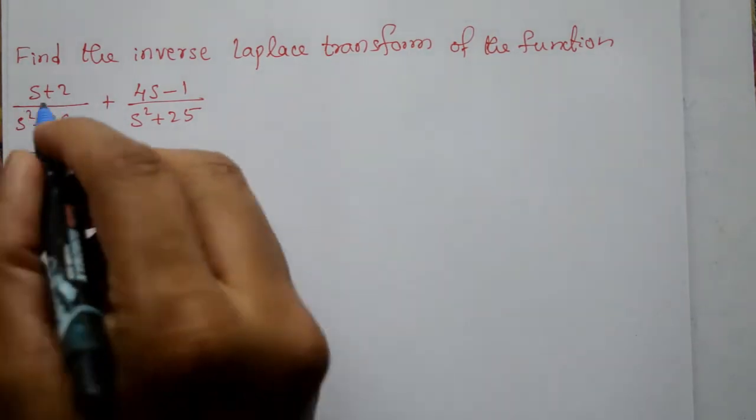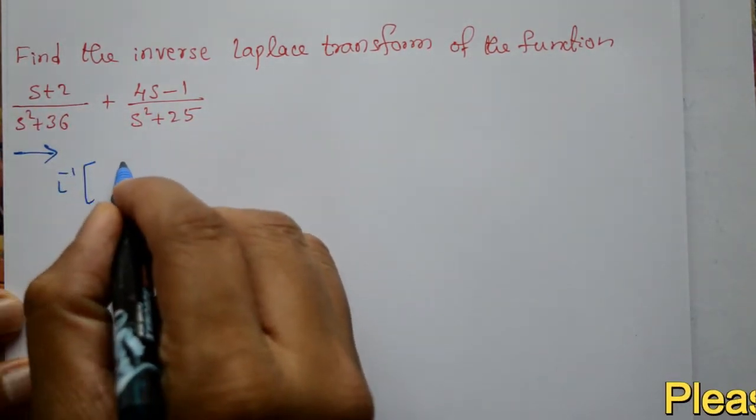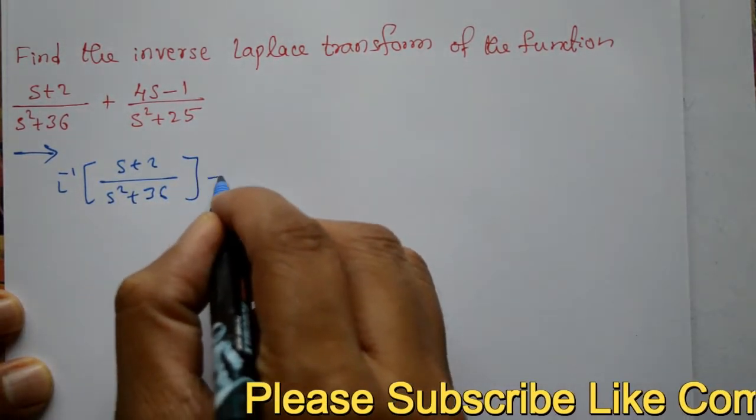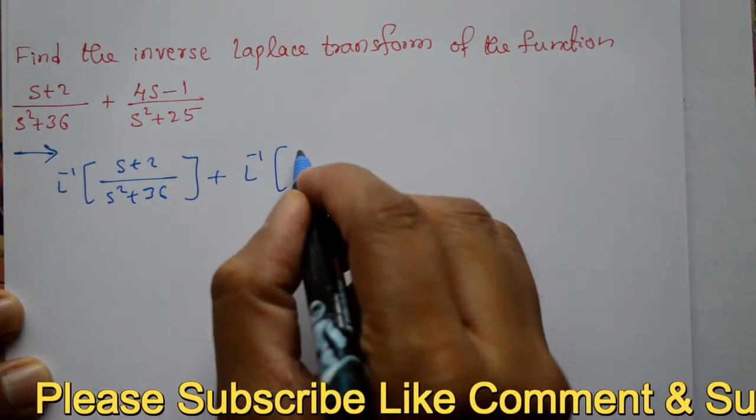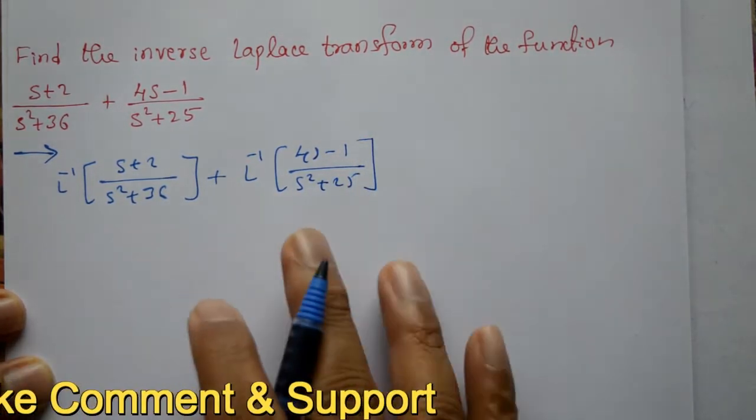First we take the inverse Laplace transform of both: inverse of (s plus 2) by s squared plus 36, plus inverse Laplace transform of (4s minus 1) divided by s squared plus 25.